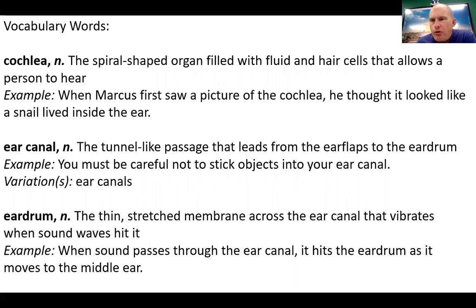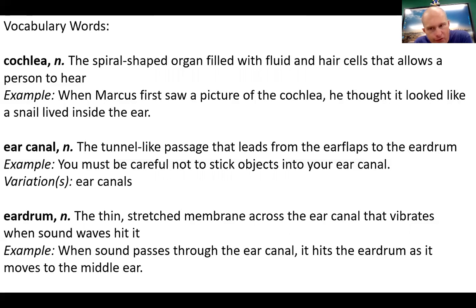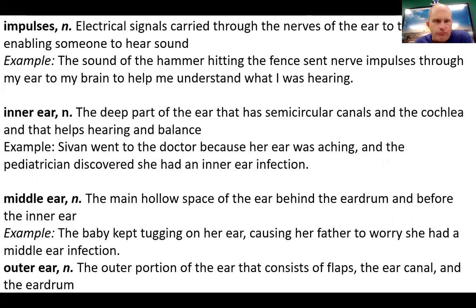For some vocabulary words, I'll let you read all these on your own. Cochlea, ear canal, eardrum — these are all things you're going to hear today in the reader that are important for you to know about. The cochlea is the spiral-shaped organ filled with fluid and hair that allows a person to hear. Your ear canal is the thing in your ear that you don't want to stick objects into. It protects your ear and goes through the ear flap to your eardrum — like a little tunnel. Impulses are electrical signals carried throughout the nerves from the ear to the brain, enabling you to hear a sound.